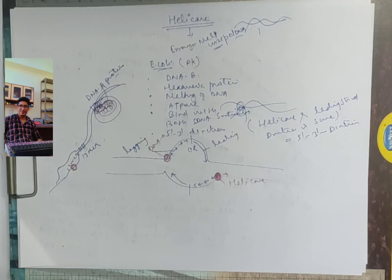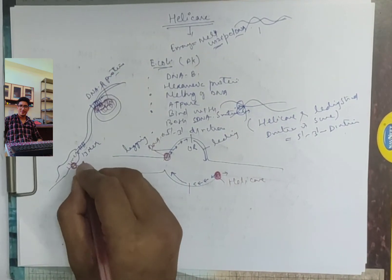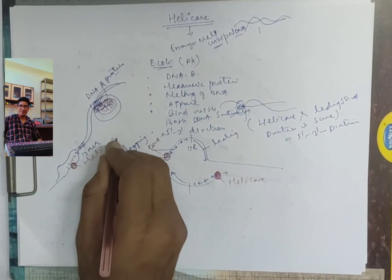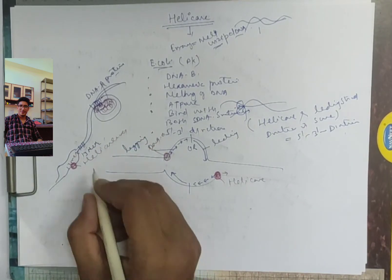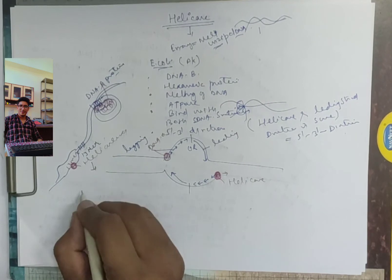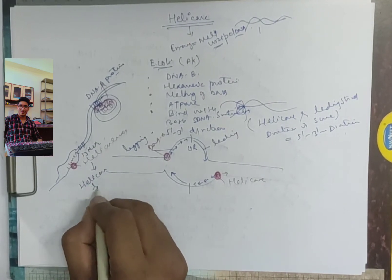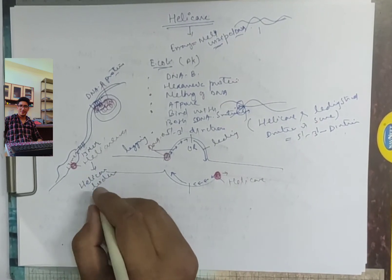At the 13-mer, the DNA is opened and melted. The 13-mer region is broken open in prokaryotes. At the template of the lagging strand, helicase binds. Then another enzyme — the helicase loader — also comes in, which is called DNA C.